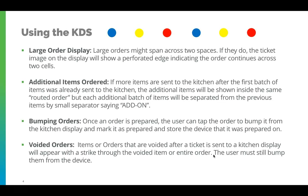When using the KDS, large orders might span across two spaces. If they do, the ticket image on the display will show a perforated edge indicating the order continues across two cells. Additional items ordered will have add-ons shown at the top. If more items are sent to the kitchen after the first batch was already sent, the additional items will appear inside the same routed order, but each additional batch will be separated from the previous items with a small separator labeled 'add-on.'